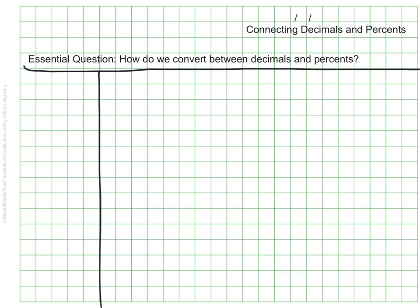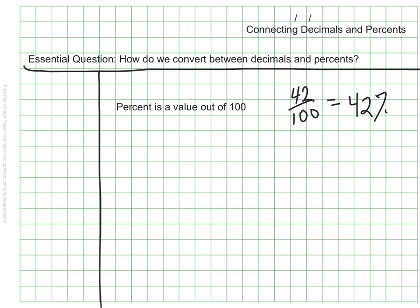One thing we need to remember is that a percent is a value out of 100. So if there are 42 people out of 100 people who said their favorite color is blue, we know that that would be 42% of the people who were polled.